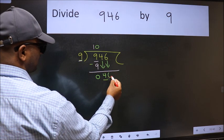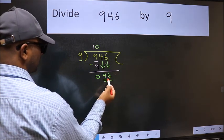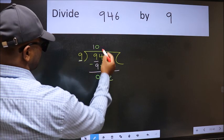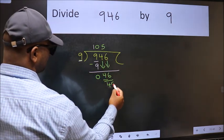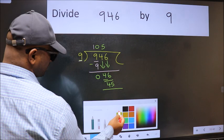Now 46. A number close to 46 in nine table is nine five 45. Now we should subtract.